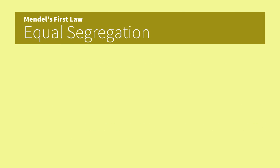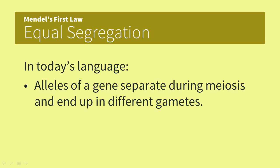Mendel stated his first law as equal segregation from examining all of his data. He reasoned that parents pass on only half of their genetic material, or factors as he called them, to their offspring through the gametes. Thus the pair of alleles segregate during meiosis and haploid gametes are produced. Recall Mendel singing: 'Here's the news, they come in twos. They segregate, it's up to fate, if an egg or a sperm has a trait that will dominate.' This part of the song refers to equal segregation.